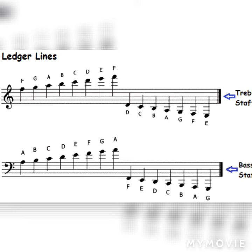The same pattern applies below the staff. For treble clef going down, you have D, then C in the middle, then B over, then A middle-over, then G over-over. It all follows a pattern.